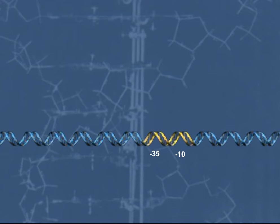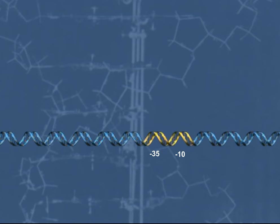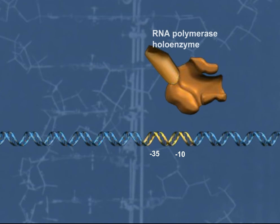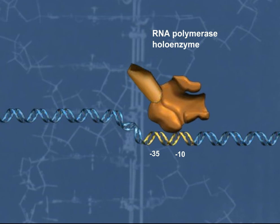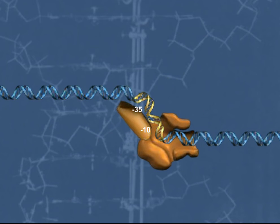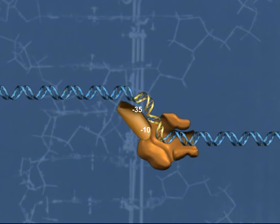In order to initiate transcription in bacteria, core RNA polymerase and sigma factor form a holoenzyme. Sigma factor recognizes the sequence of DNA at the promoter region. This holoenzyme then binds to the promoter region of the DNA molecule, forming the closed complex between RNA polymerase and the DNA molecule.